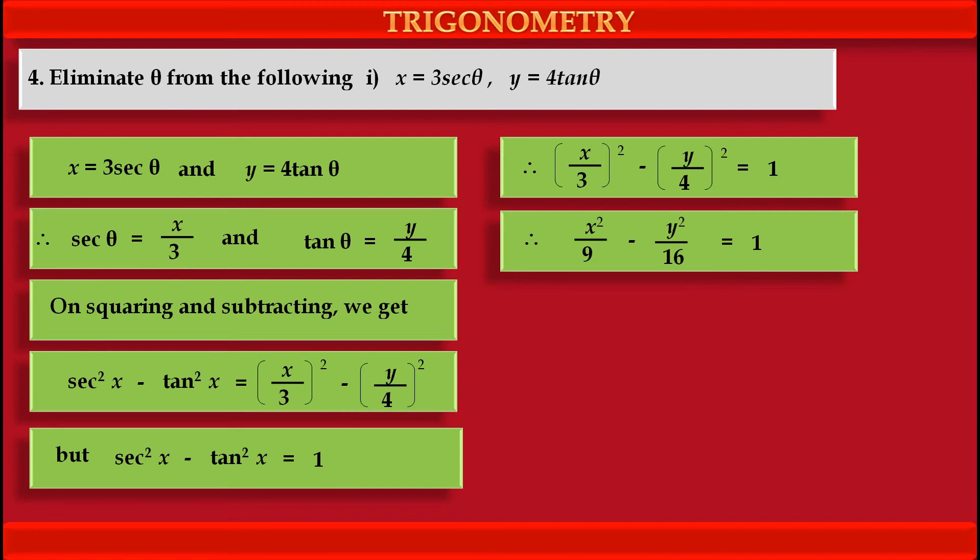Further, we can solve this equation and simplify it. Solving this equation means multiplying both sides, each and every term, by the LCM of the denominator, that is 9 into 16, which means 144. Multiplying by LCM of 144 to each and every term on both sides, we get 16x squared minus 9y squared is equal to 144.